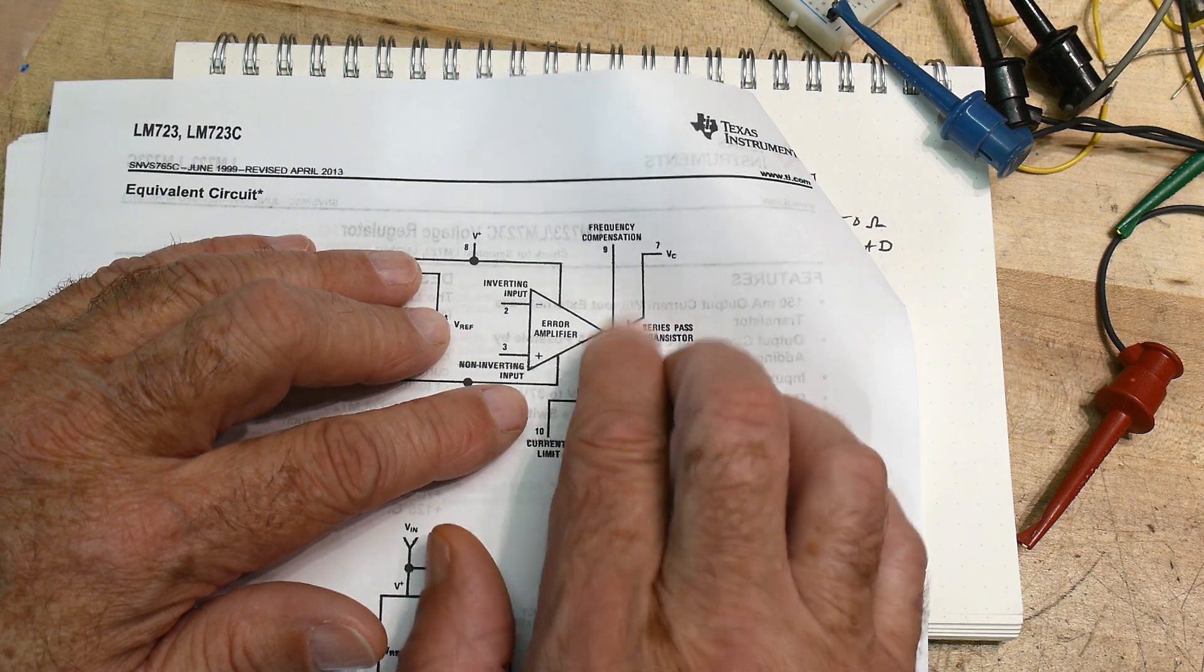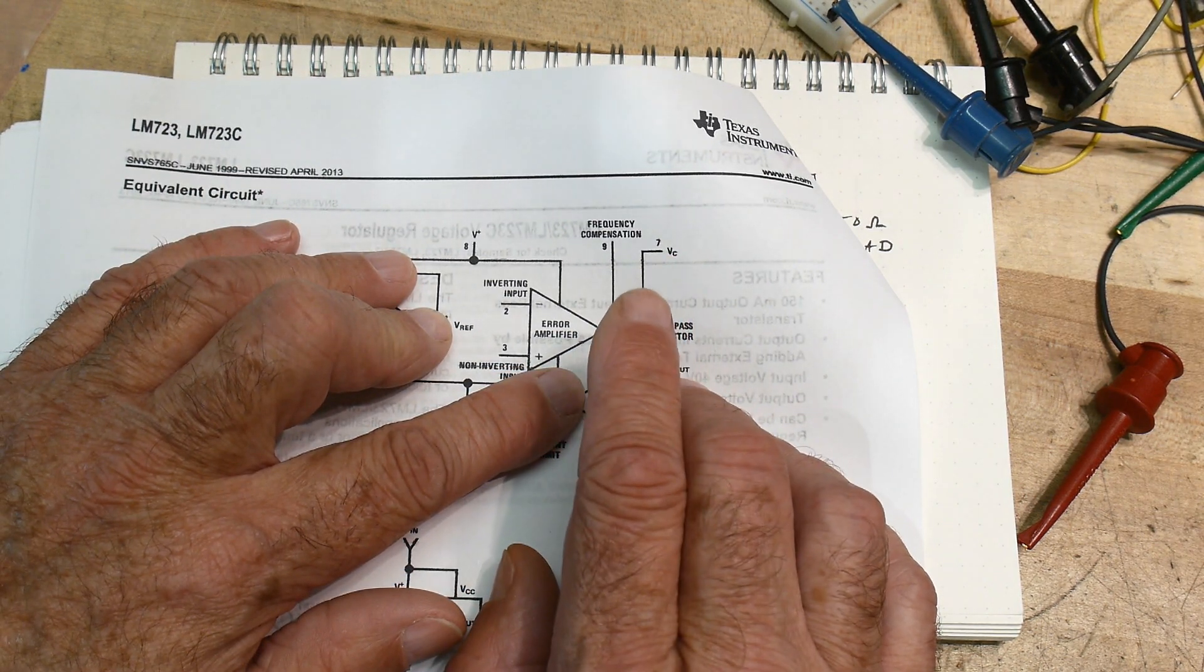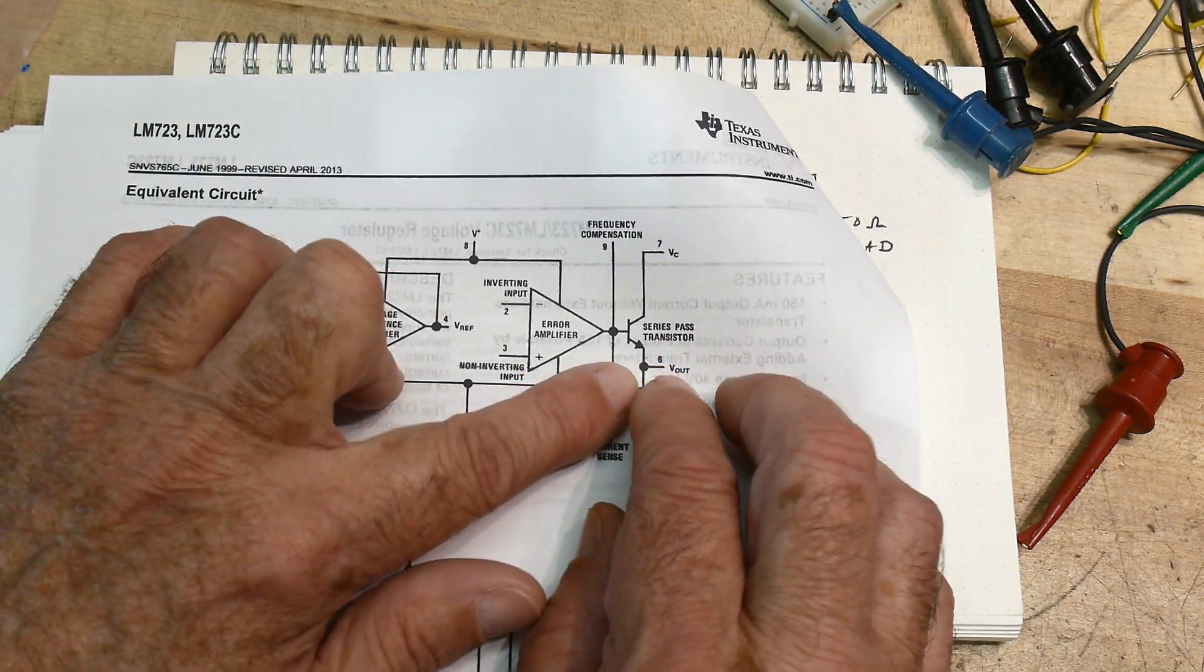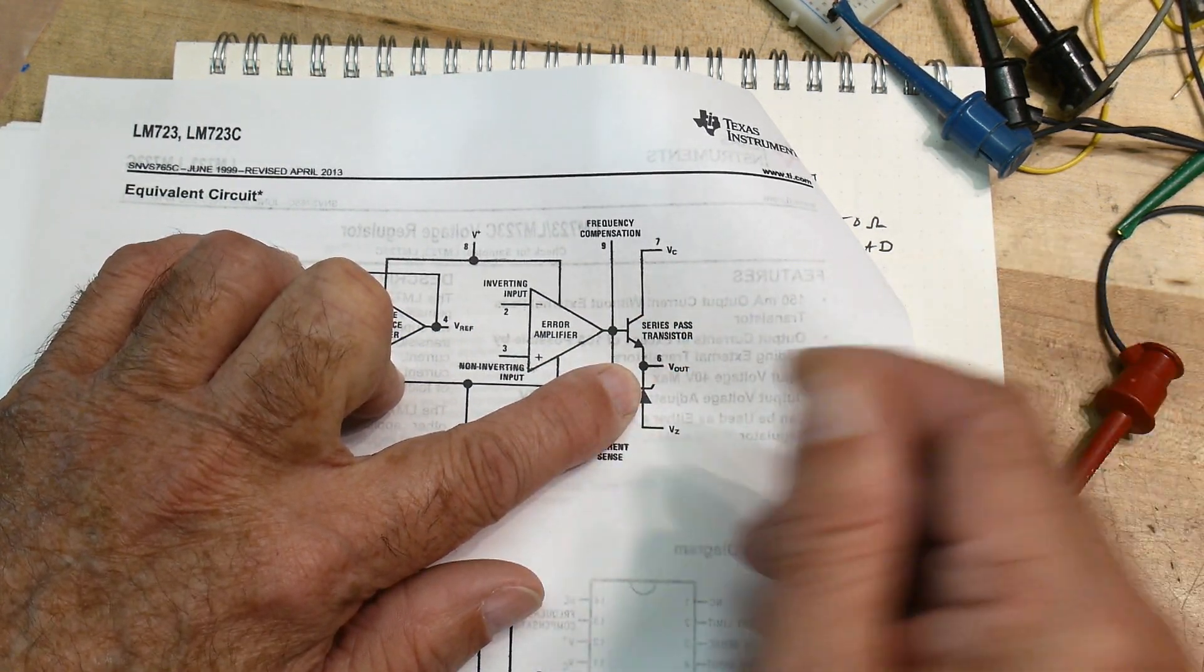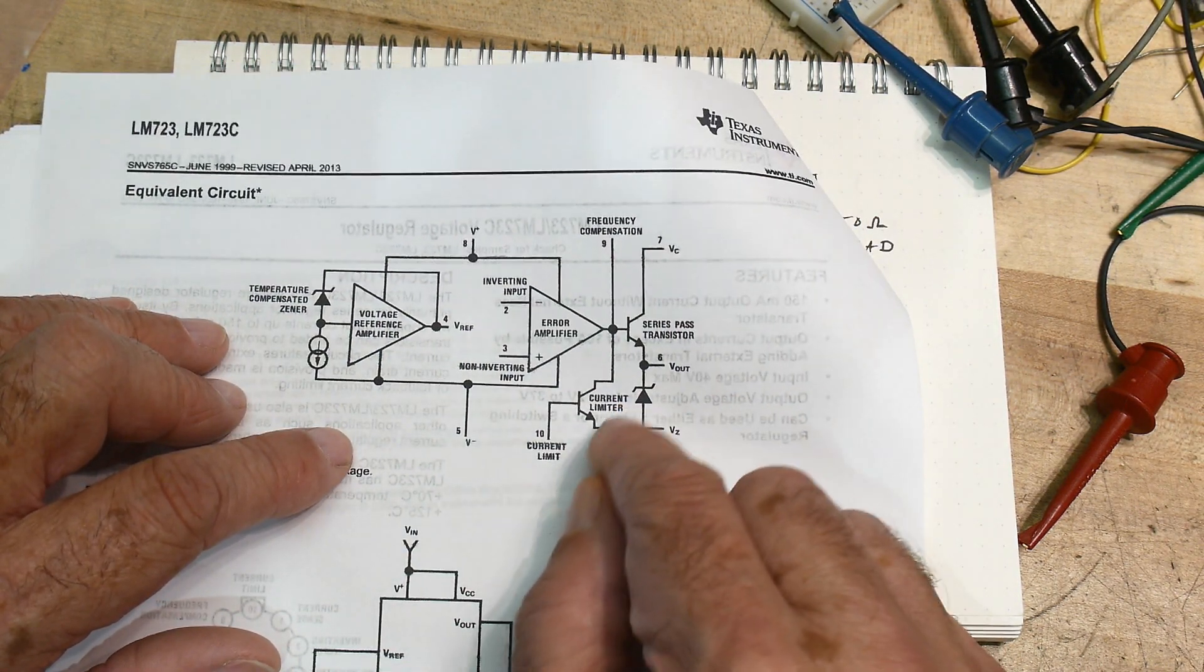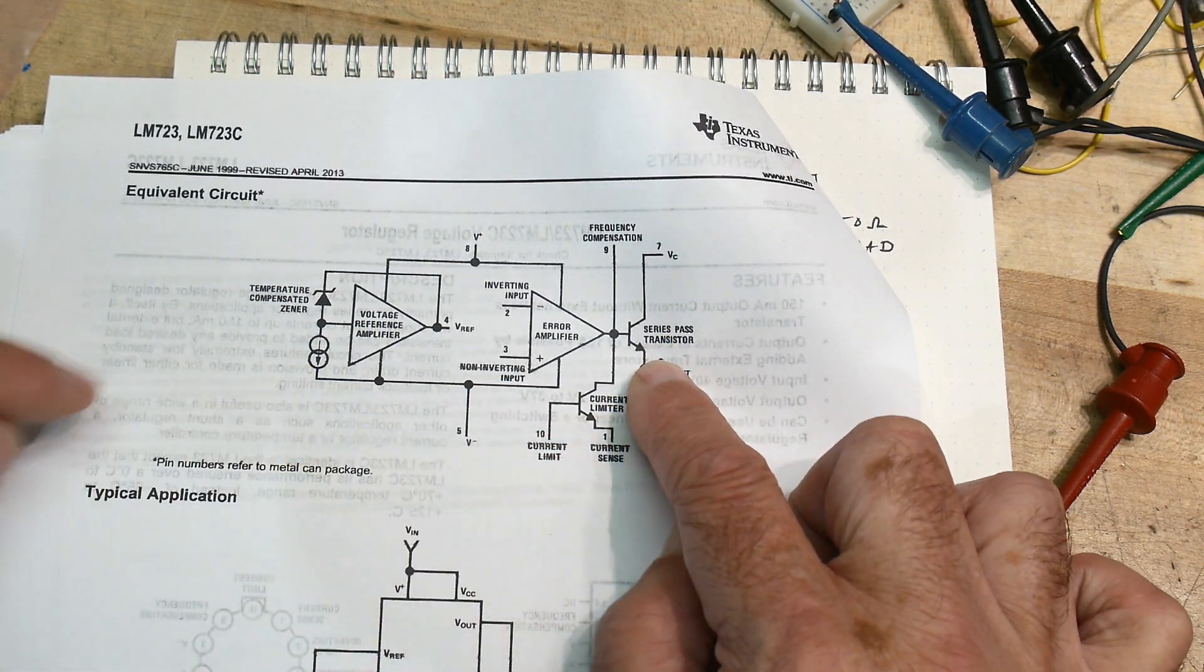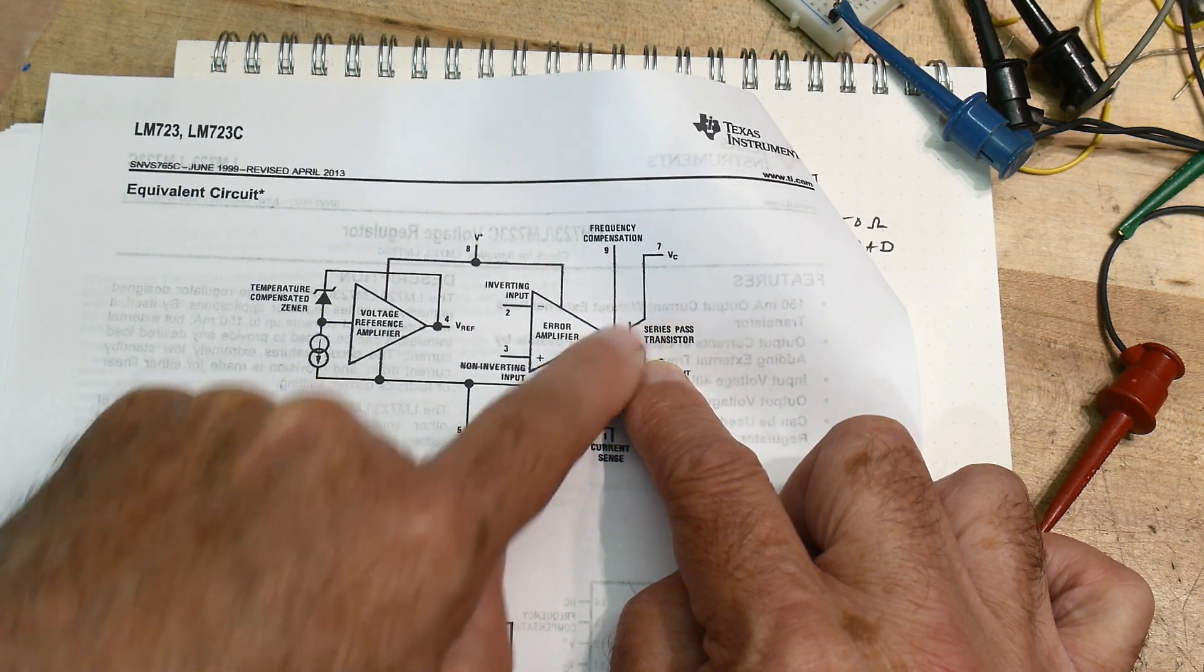So then it's got this op amp and it's got the NPN transistor on it. Now I think this thing's good to 150 milliamps all by itself, but you can use this transistor to then drive another transistor in like a Darlington configuration and get more current out that way.